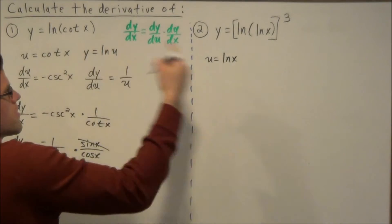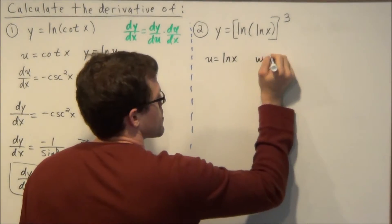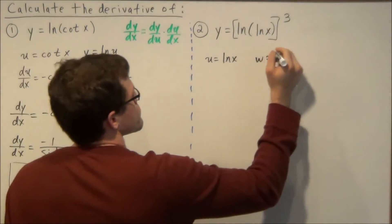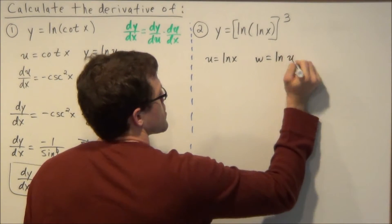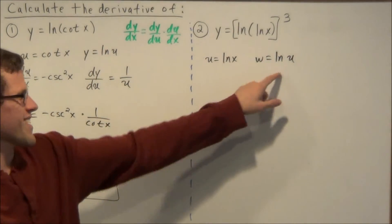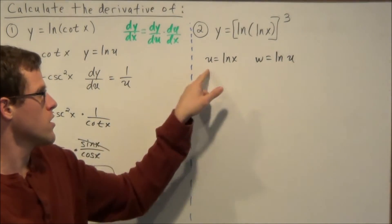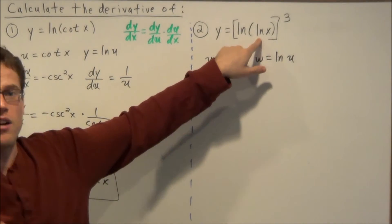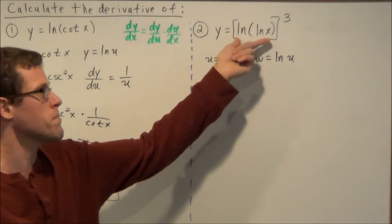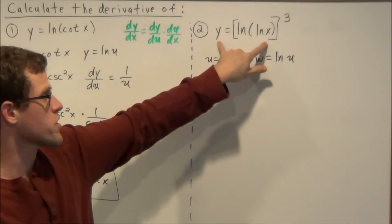And then we need another variable, let's say w, and that would represent natural log of u. So if we look at this at this stage, natural log of u would be natural log of natural log of x. So it's like, in a sense, rebuilding the function that we're given here.